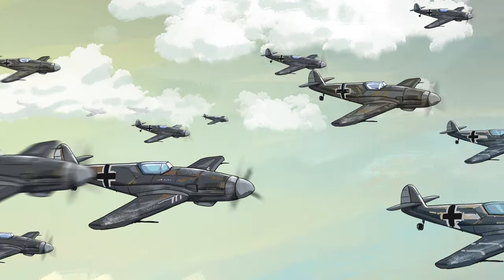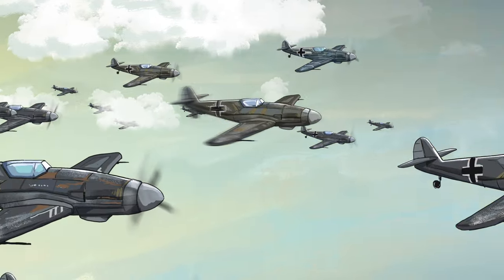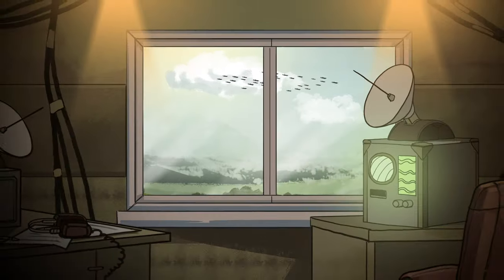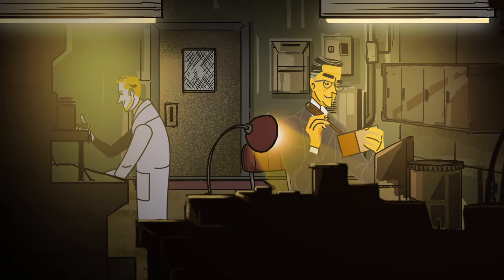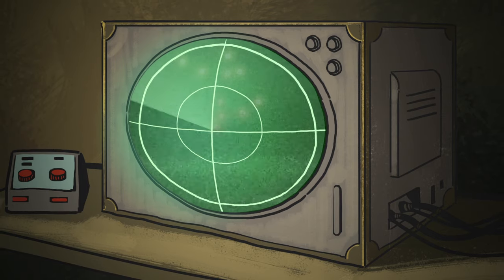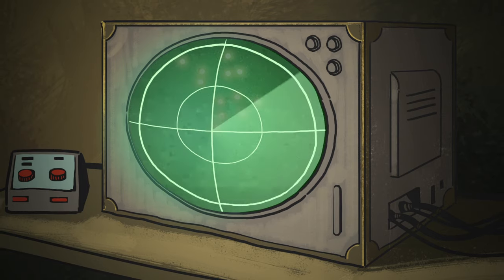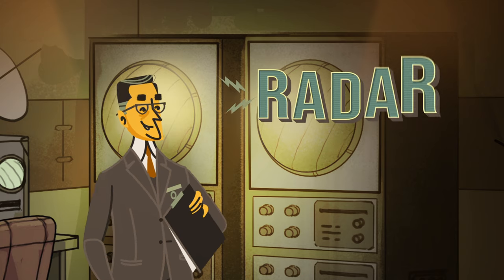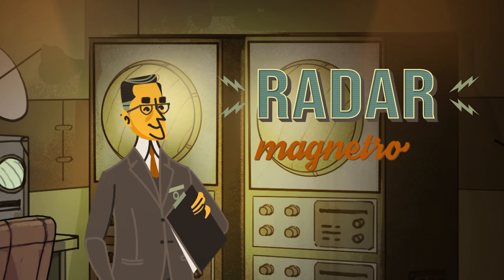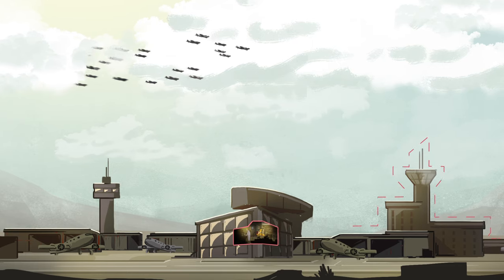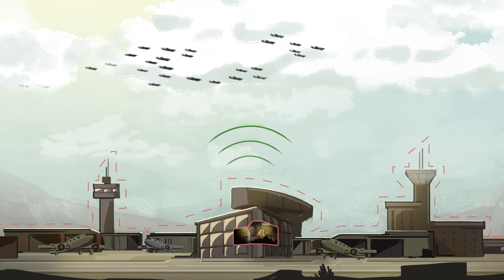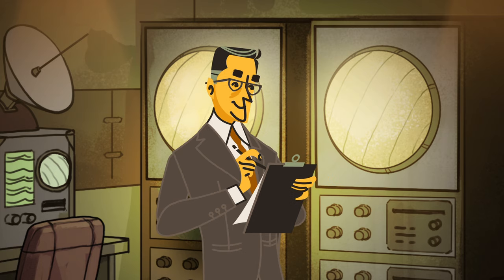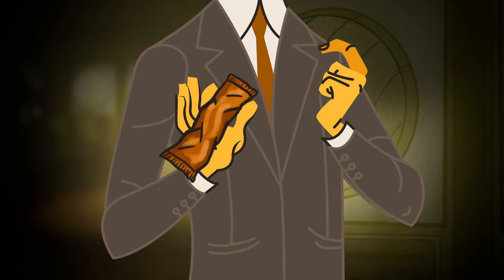American engineer Percy Spencer developed World War II radar technology that helped detect Nazi airplanes, but it would soon have other surprising applications. One day in 1945, Spencer was standing near a radar instrument called a magnetron, a device that produced high-intensity microwaves that could reflect off planes. Suddenly, he noticed that the candy bar in his pocket had melted.